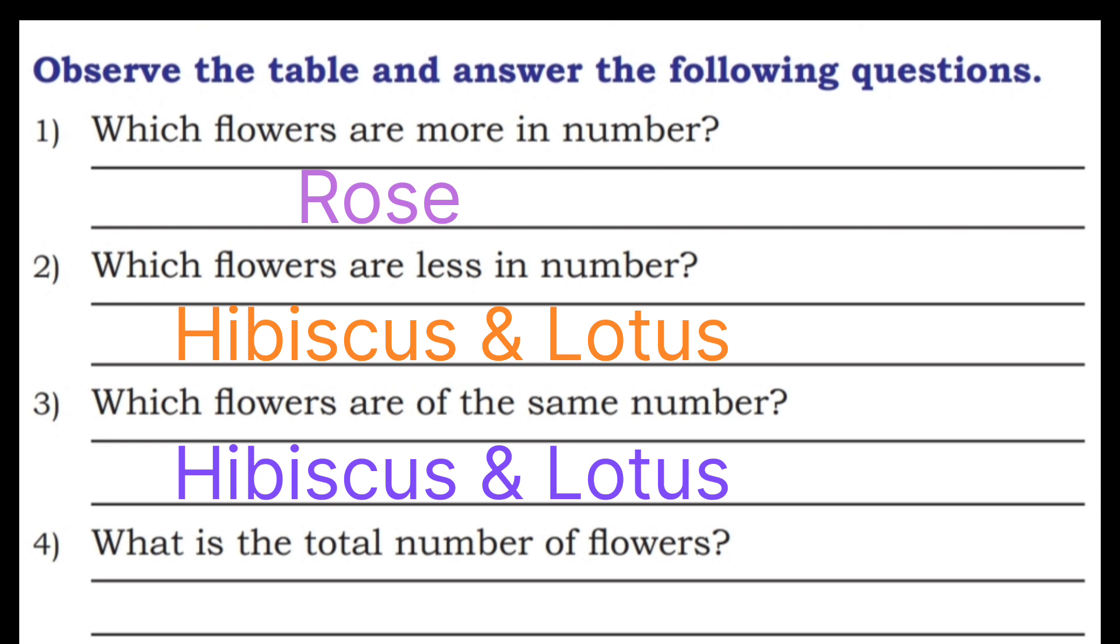Fourth question, what is the total number of flowers? Rose is 10, sunflower is 8, hibiscus and lotus are 5, 5. So 10 plus 8 is 18, 18 plus 5 is 23, 23 plus 5 is 28 flowers.